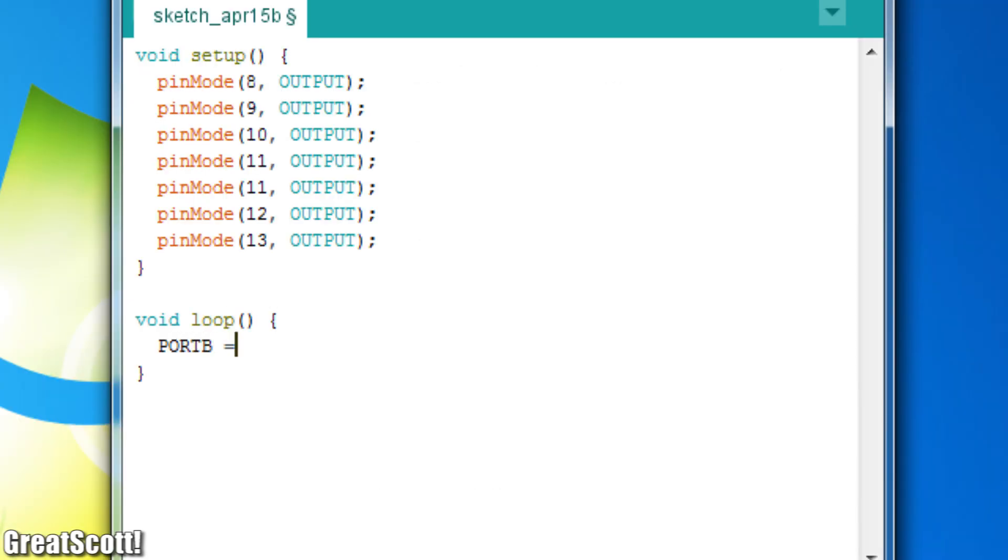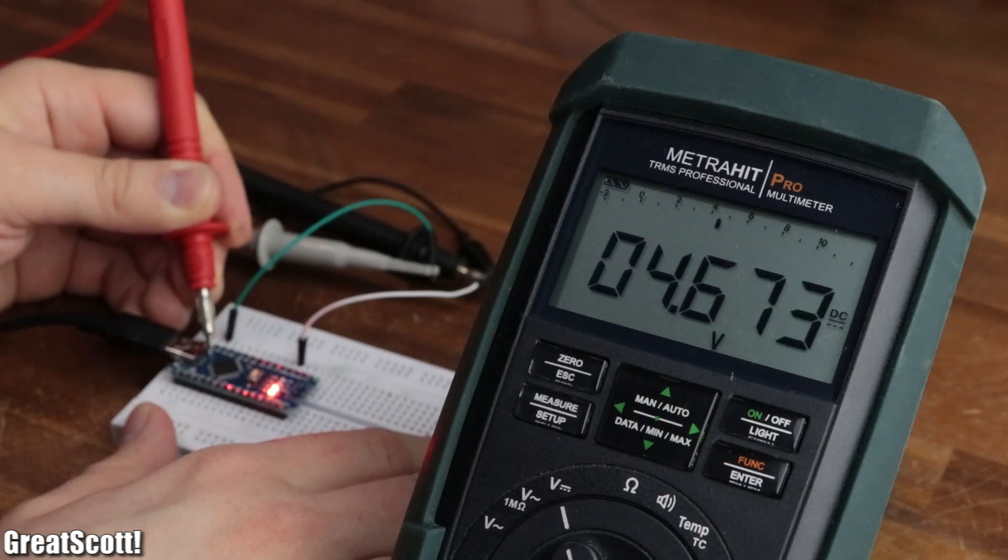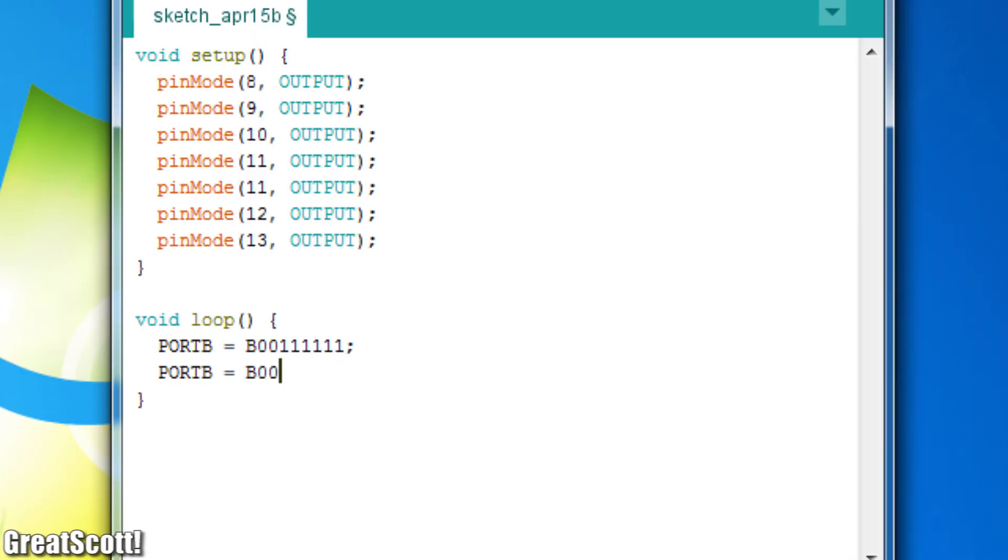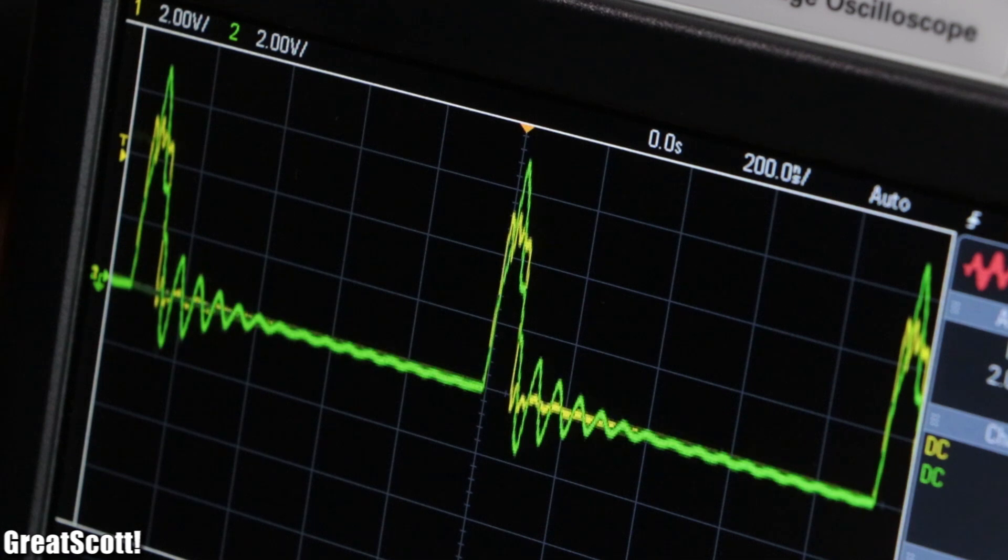Now we can easily set almost all the register bits of port B to 1 and thus turn on the digital pins 8 to 13. And by converting all those bits back to a 0 we can turn them all off absolutely simultaneously.